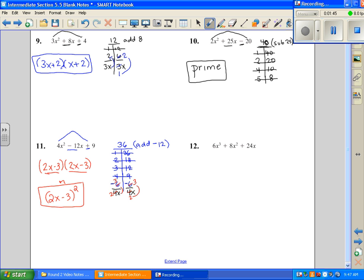Let's look at number 12. Number 12, we're going to check for a GCF first. A 2 and an x can come out of everything. So if I take out a 2x to start, I'm left with 3x squared plus 4x plus 12.